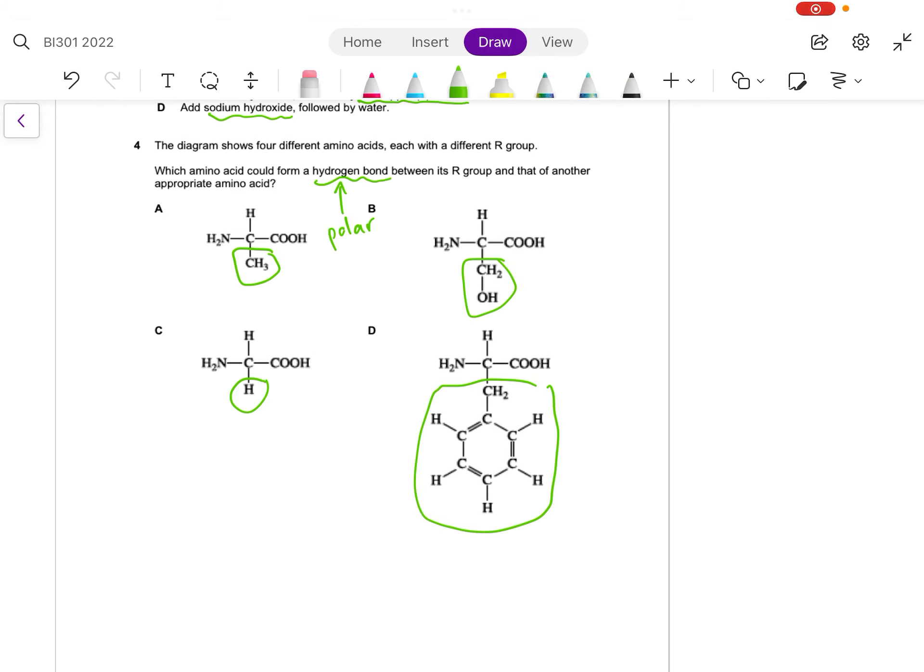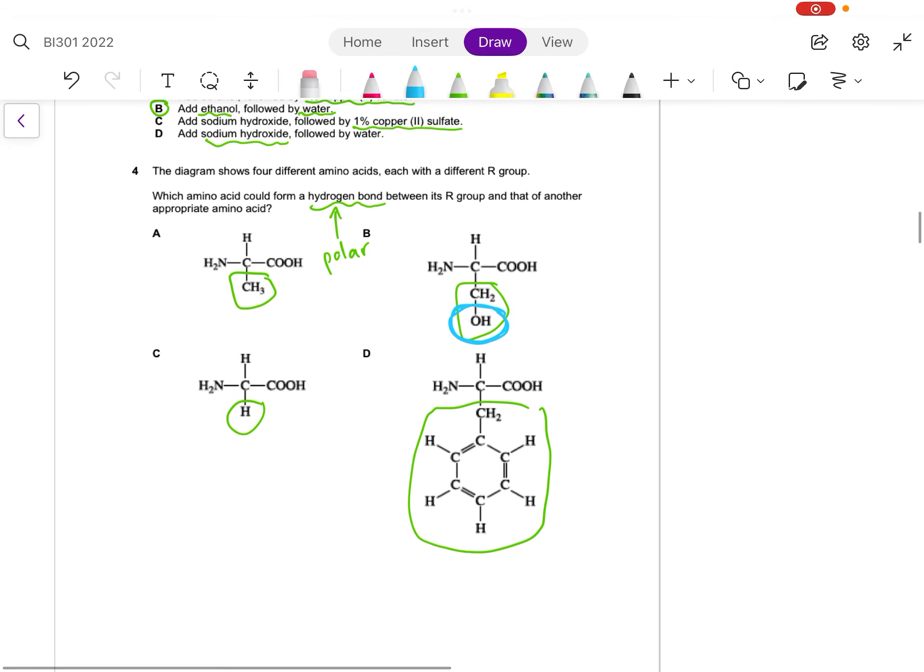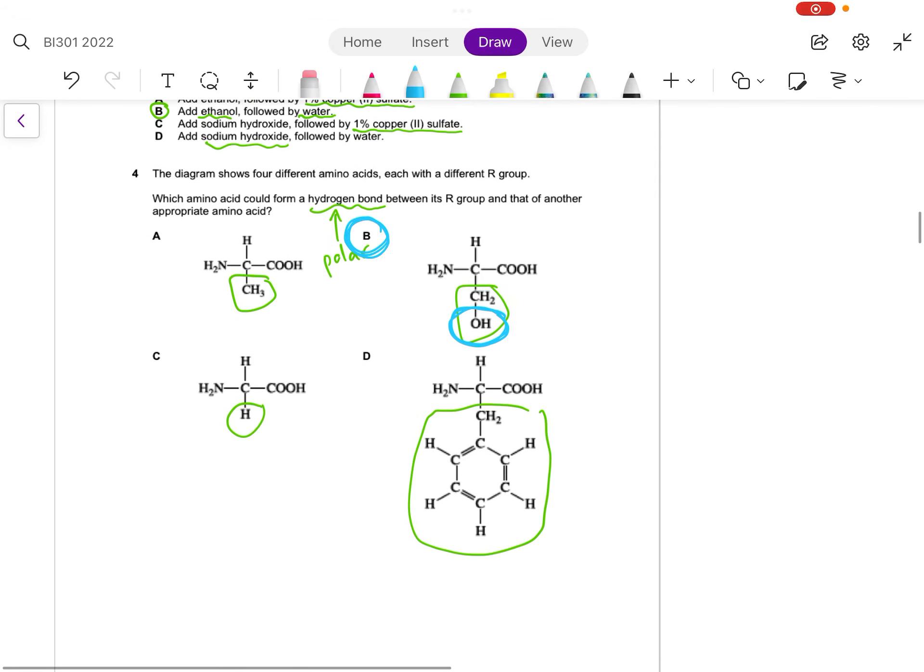Out of all of these R groups, the only one that has a polar functional group is this one over here. So for question four, B would be the best answer. This one over here, this large structure, does not come with any polar functional groups, same for A and same for D. In fact, A, C and D are non-polar functional groups.